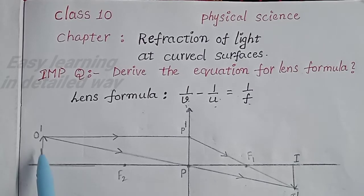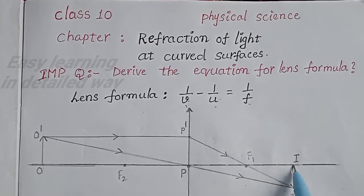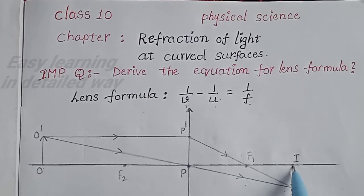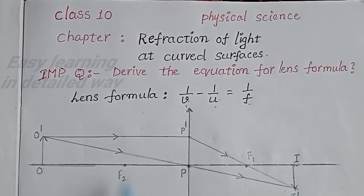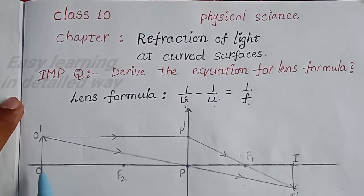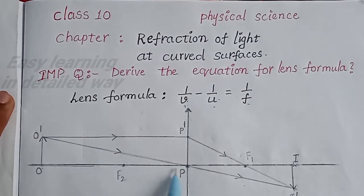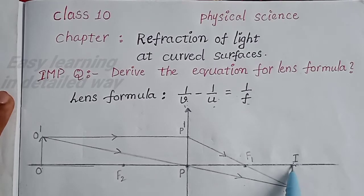See, O' is an object and I' is the image. P-I is the distance of the image. P-O is the distance of the object because O' is the object. The light ray is passing through F1 here, and another ray passing through the optic centre does not deviate. Both rays are intersecting at I', forming image I'.